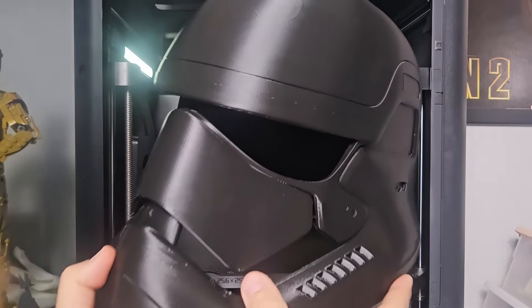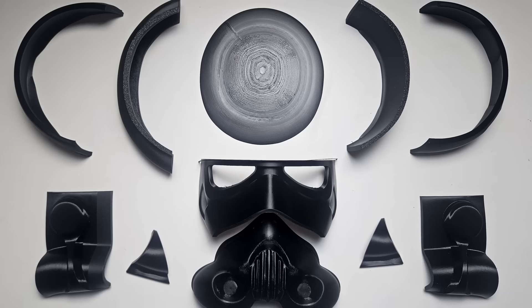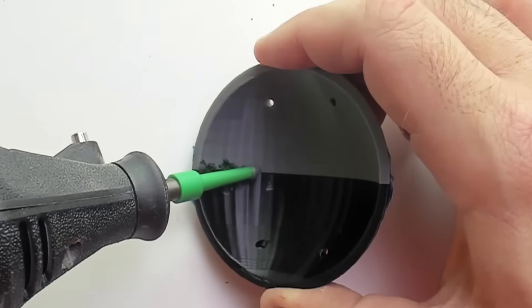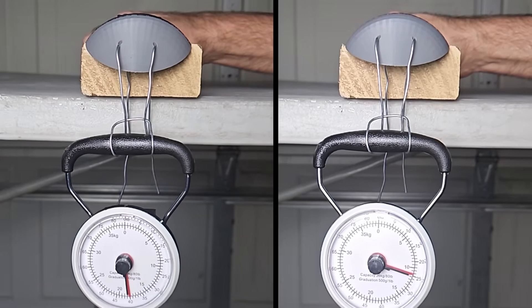So you want to 3D print a part that's too large for your printer? Then you'll need to break it up into smaller parts and find the best way to combine them into one solid piece. Today I'll show you a few different methods and test which ones have the strongest bonds.